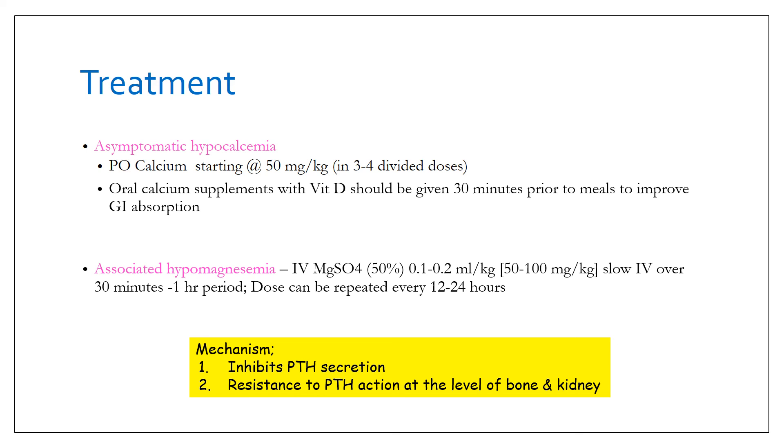Remember, the mechanism by which hypomagnesemia leads to hypocalcemia is by not only inhibiting parathormone secretion but also by producing resistance to parathormone action at the level of the bone and kidneys.